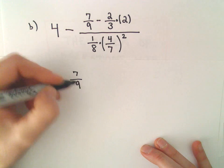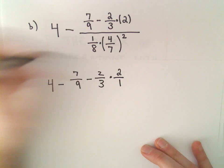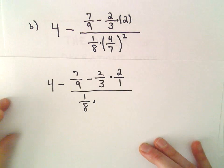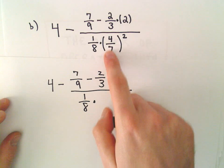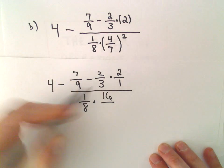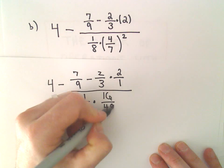So we've got 4 minus 7 ninths minus 2 thirds. I'm going to write 2 as simply 2 over 1, all over 1 eighth times, I'm going to go ahead and square this. This would be 4 times 4, which would be 16, and then we have 7 times 7, which would be 49.